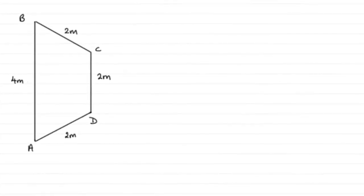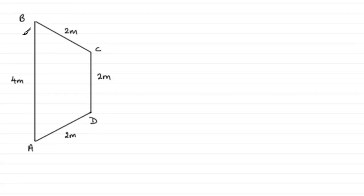For this question we're given a uniform lamina in the shape of a trapezium. The uniform lamina ABCD has the lengths of the edges marked: two meters, two meters, two meters and four meters. We're asked to show that the center of mass of this lamina is a distance four root three over nine meters from edge AB.